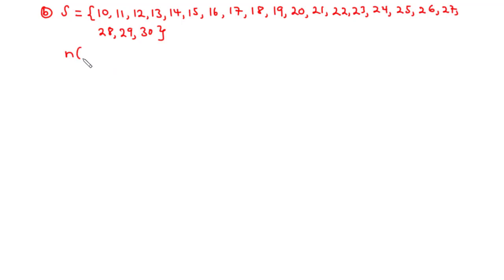The number of elements in the sample space is 21, counting from 10 to 30 inclusive. Now we are going to find the numbers which are multiples of 3 and multiples of 4.